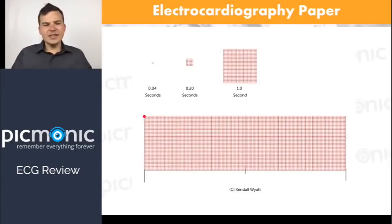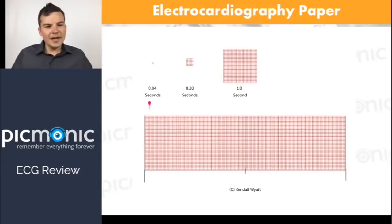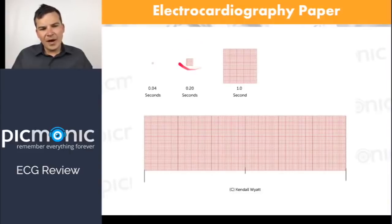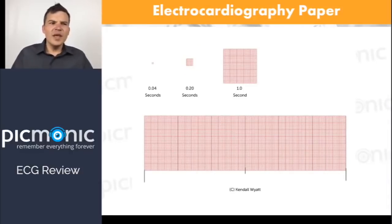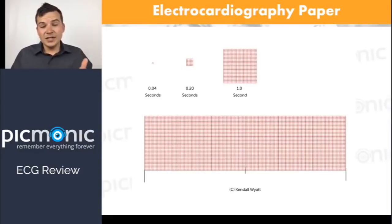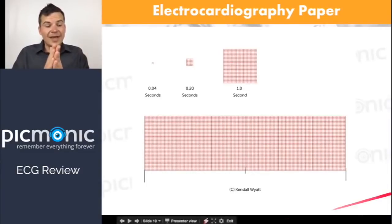Now, why is that 0.2 seconds so important? The 0.2 seconds is where we measure heart blocks. We're measuring that period of time between the P wave and the QRS, and that measures heart blocks — specifically that's where the PR interval threshold falls.